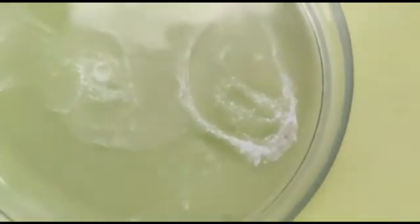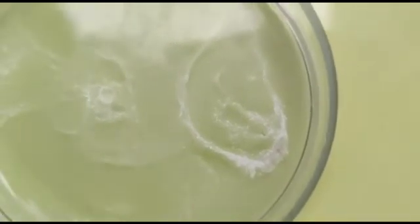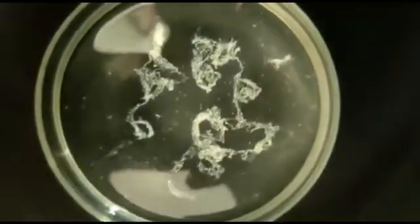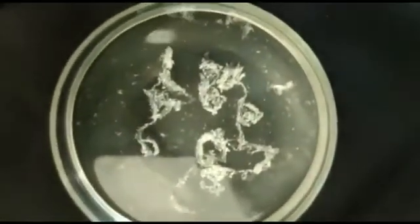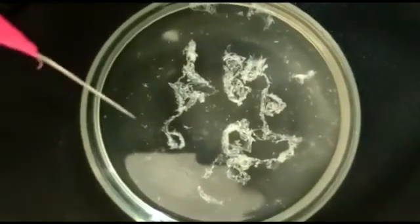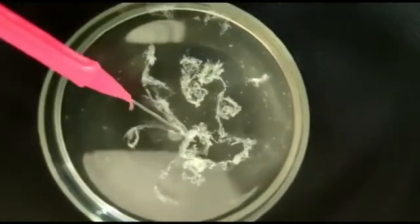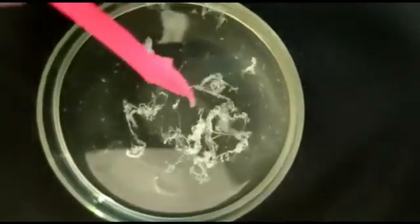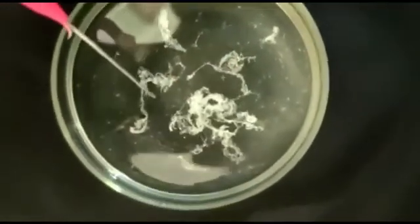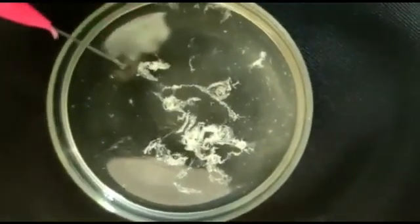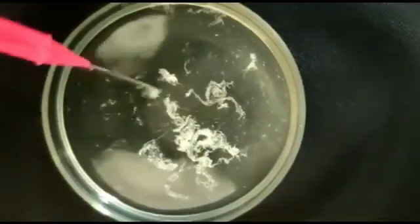After some time, we observe again. Now you can see these fibers—threads of DNA precipitated out. With the help of a needle, you can collect them at one place. All these are threads of DNA. So in this way, we can isolate DNA from onion.